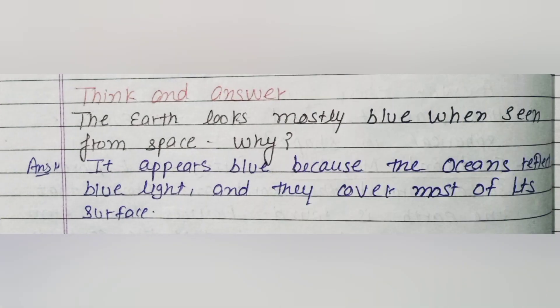Now, think and answer: The earth looks mostly blue when seen from space — why? Yeh puchha gaya hai ki earth jo hai wo mostly hameh blue color ki dekhti hai jab hameh ushe space se dekhte hai, aisa kiyo hai. Answer: It appears blue because the oceans reflect blue light and they cover most of its surface.